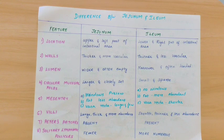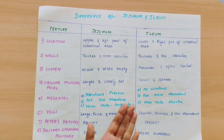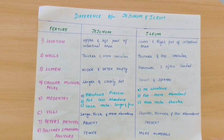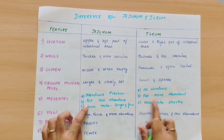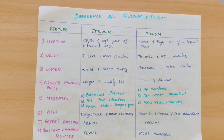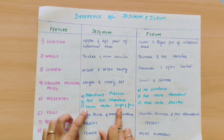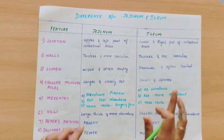To repeat: the mesentery is the connection between the posterior abdominal wall and the small intestine via peritoneum. Windows are present in the jejunum's mesentery due to less fat deposition, allowing light to pass easily. Windows are not present in the ileum. Fat deposition is less in the jejunum and more in the ileum. The vasa recta is long and few in the jejunum, and shorter and more numerous in the ileum.